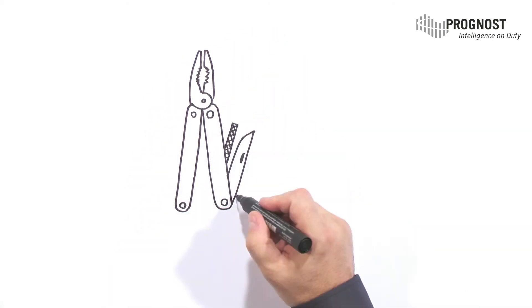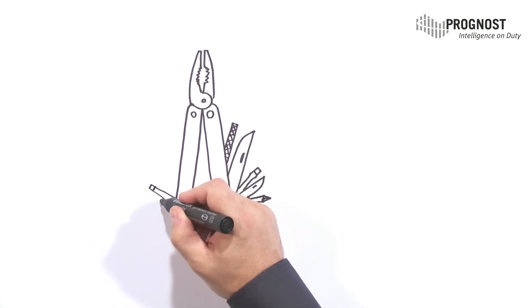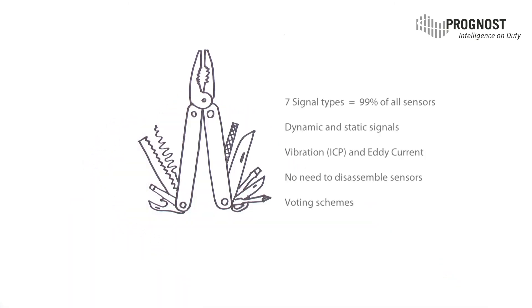Prognos Sensim is your multi-tool for all loop validation tasks. Seven signal types to simulate 99% of all sensors. Dynamic and static signals, including ICP and eddy current—signal types no other tool can produce. No need to disassemble sensors. Validate complex measuring loops in a fraction of the time you needed before.